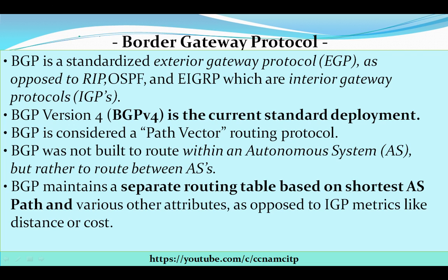BGP is a standardized exterior gateway protocol, which is known as EGP. The most important thing is that it is opposite to RIP, OSPF, and EIGRP, which are interior gateway protocols. If we talk about RIP, OSPF, or EIGRP, they are IGP — interior gateway protocols. But BGP, the Border Gateway Protocol, is an exterior gateway protocol.